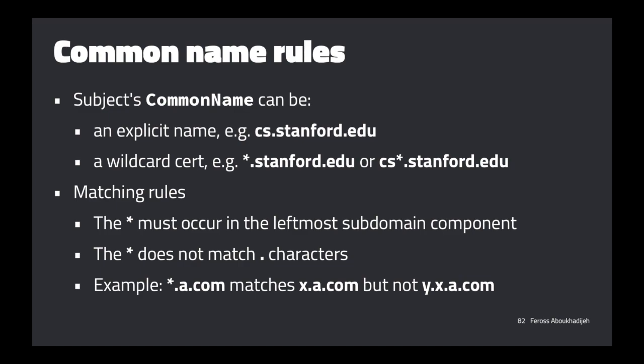The common name is usually an explicit name but can also be a wildcard — put a star in there and anything matching that pattern is trusted. This is useful for sites like Tumblr or GitHub where millions of users create sites under subdomains like something.tumblr.com or something.github.io. The star matches the leftmost subdomain component and doesn't match dots. So star.a.com matches x.a.com but not y.x.a.com — you can't have an infinite number of subdomains.